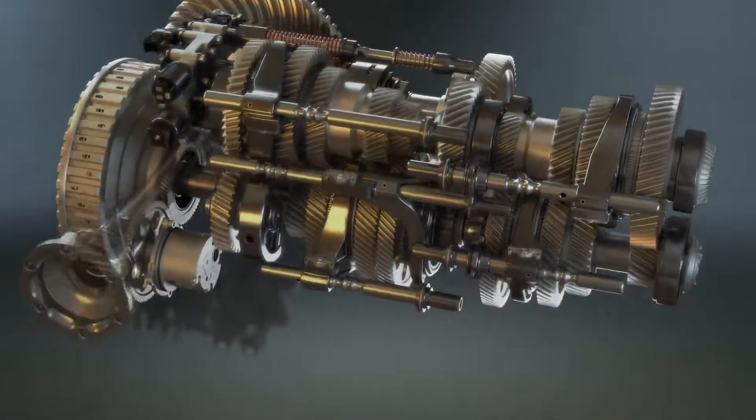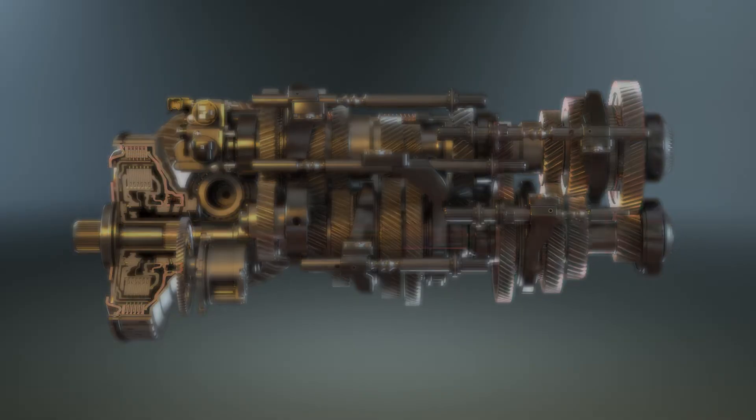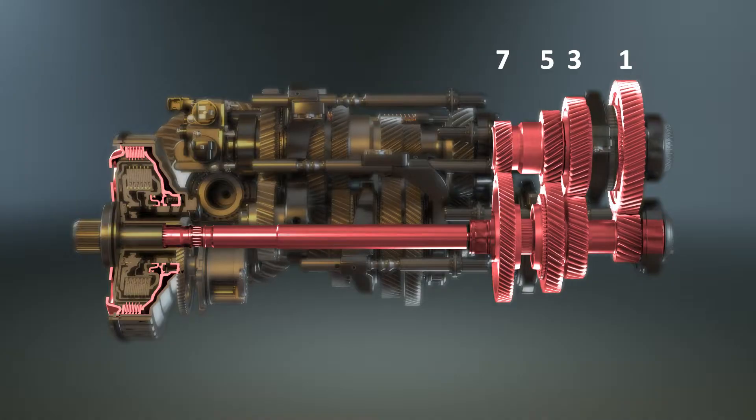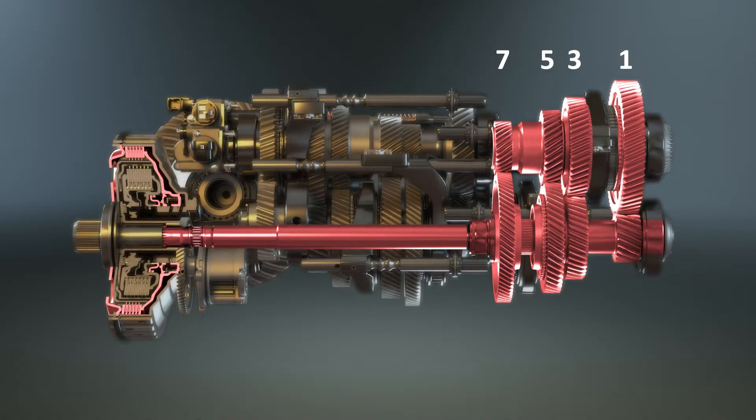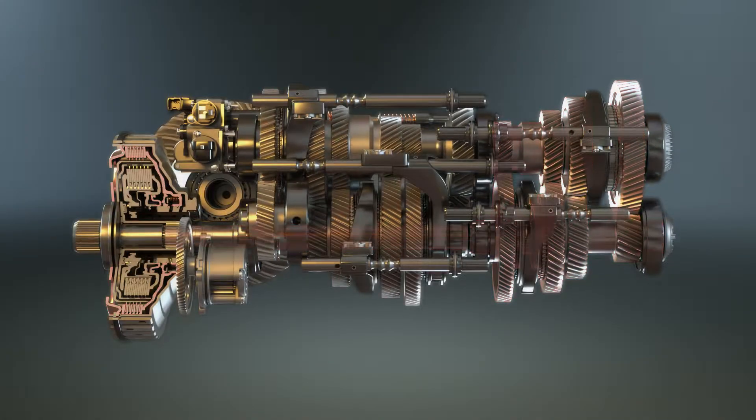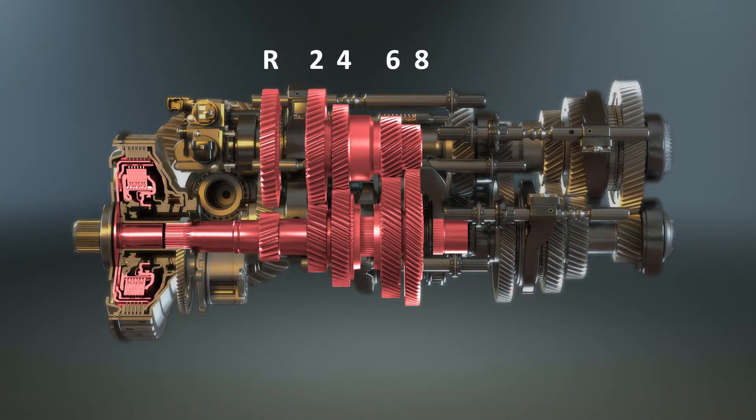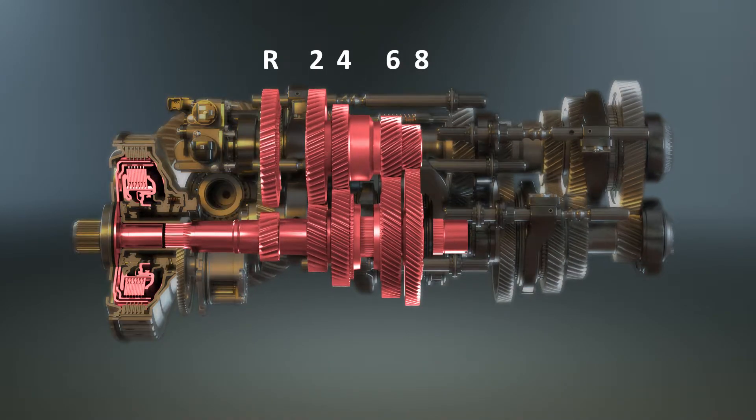The DCT features an inner concentric driveshaft connected to the outer clutch, driving the odd set of gears 1, 3, 5 and 7. The outer concentric driveshaft is connected to the inner clutch, driving the even set of gears 2, 4, 6, 8 and reverse.